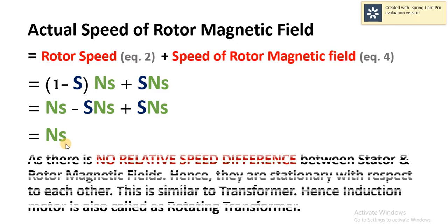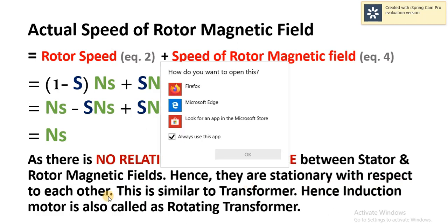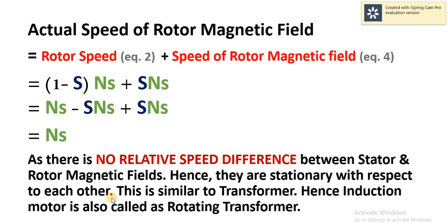As the speed of the stator magnetic field and rotor magnetic field is equal, they are travelling at the same speed. Therefore, there is no relative speed difference between the stator and rotor magnetic fields. Hence, we can assume them stationary with respect to each other, and this is similar to a transformer. Hence, the induction motor is also called a rotating transformer.